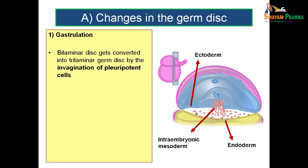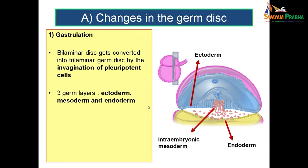Pluripotent cells are cells capable of giving rise to any sort of cells. Ultimately you get three germ layers: the epiblast — known as ectoderm in future — the hypoblast — known as endoderm — and the intraembryonic mesoderm. Once this is established, an axial orientation of the embryo is established.